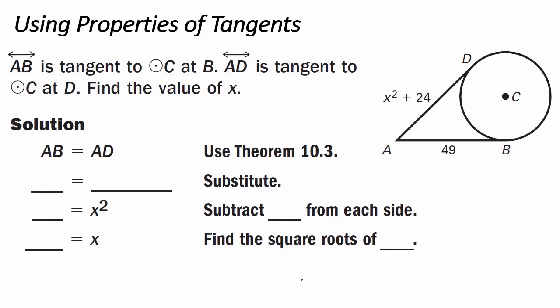Example 3: using properties of tangents. Line AB is tangent to circle C at B. Line AD is tangent to circle C at D. Find the value of X. Because two lines are tangent to the same circle and meet at the same exterior point, by Theorem 10.3, AD equals AB. So we set them equal: AB is 49, AD is X² + 24. Subtract 24 from both sides to get X² = 25. The square root of 25 is ±5.